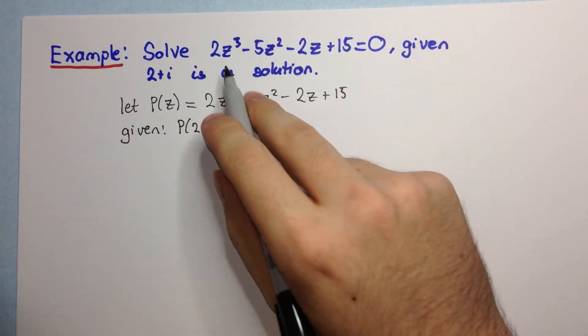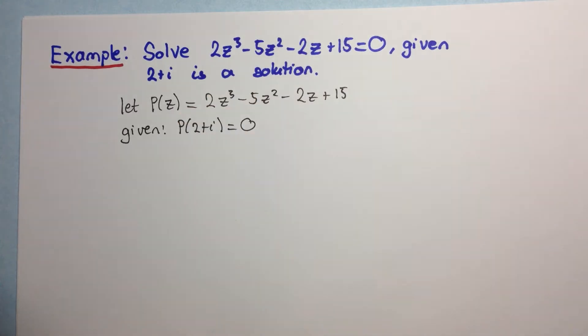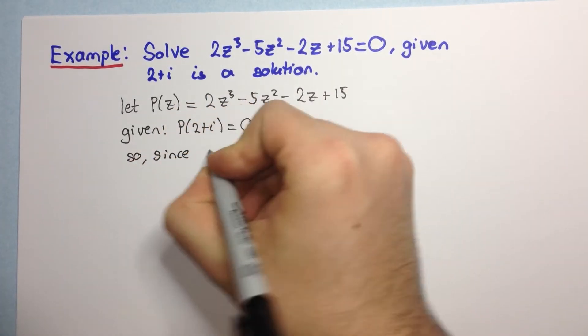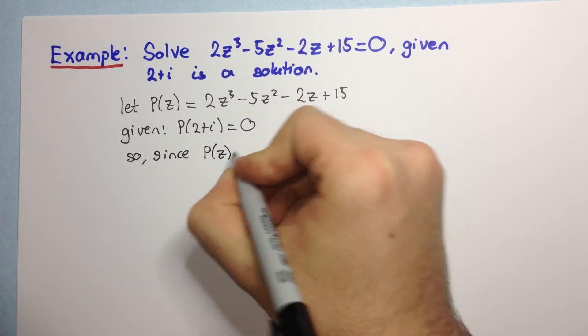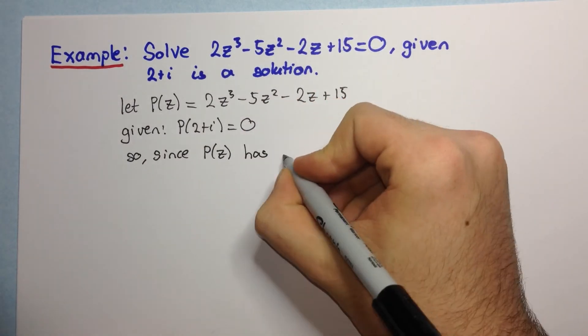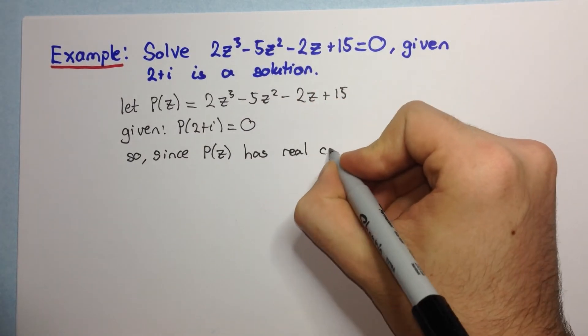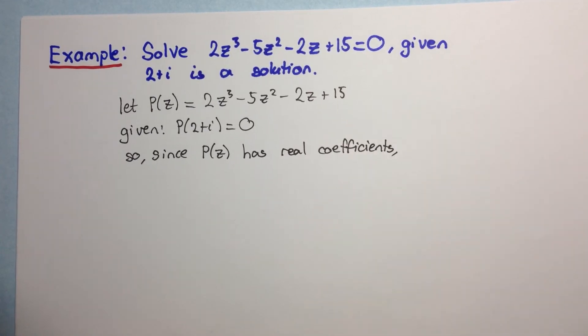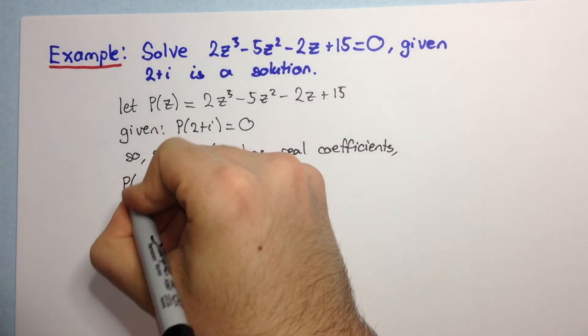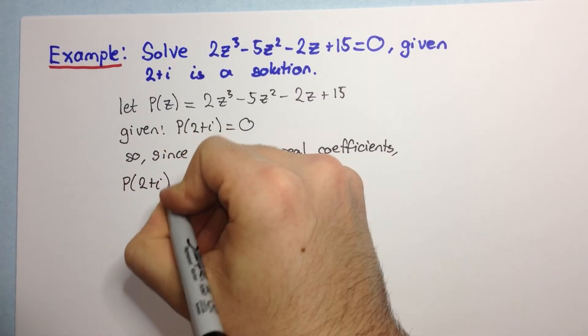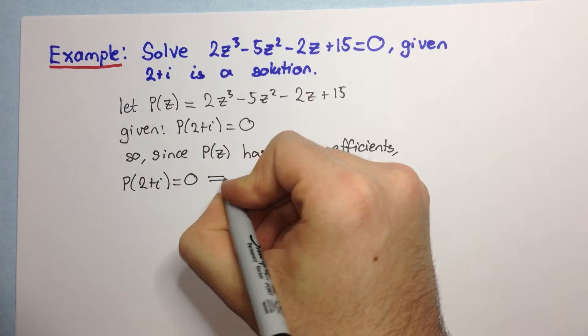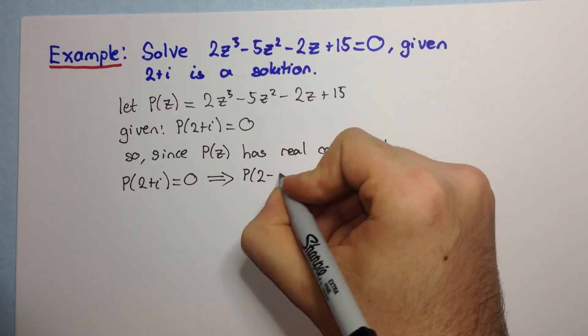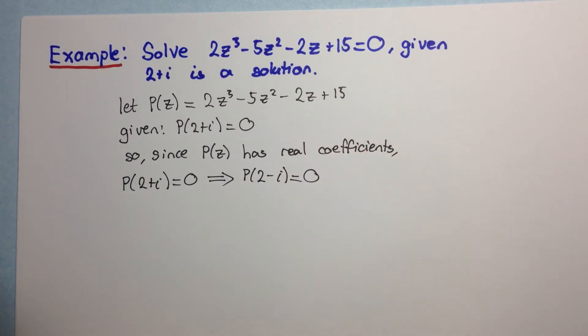Now, we note that all these coefficients here are real numbers. So, since p of z has real coefficients, the fact that p of 2 plus i is equal to 0 automatically implies that p of 2 minus i is equal to 0, and remember this is only for real coefficients.